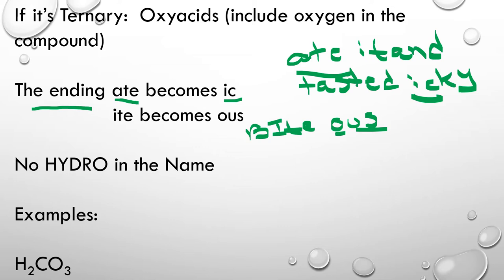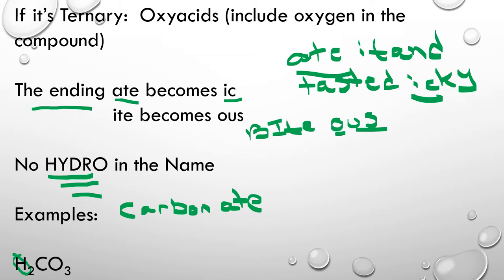Let's take a look at this first. We have a polyatomic ion because we have hydrogen first — that tells us it's an acid — and then we still have more than one element left, so we need to look at our polyatomic ion chart. We are not going to use hydro in the name if we have an O in it. An O means no hydro. So we know we have carbonate, and -ate becomes -ic, so we're going to have carbonic acid. That's how we name this if we have a polyatomic.